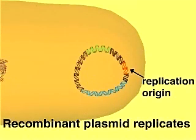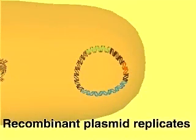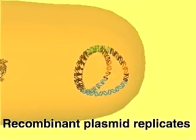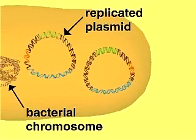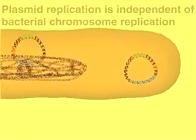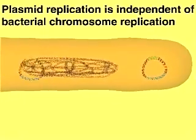The replication origin allows the plasmid to replicate by using the host cell's enzymes. Plasmid replication is independent of host cell division, but plasmids are distributed to each daughter cell when the host cell divides.